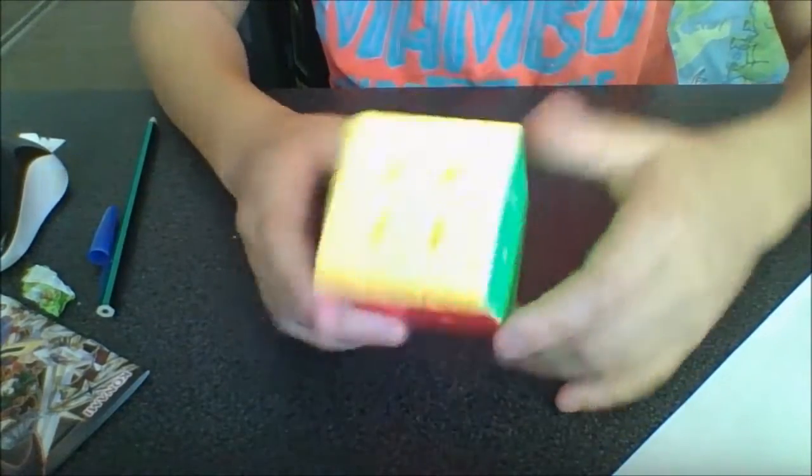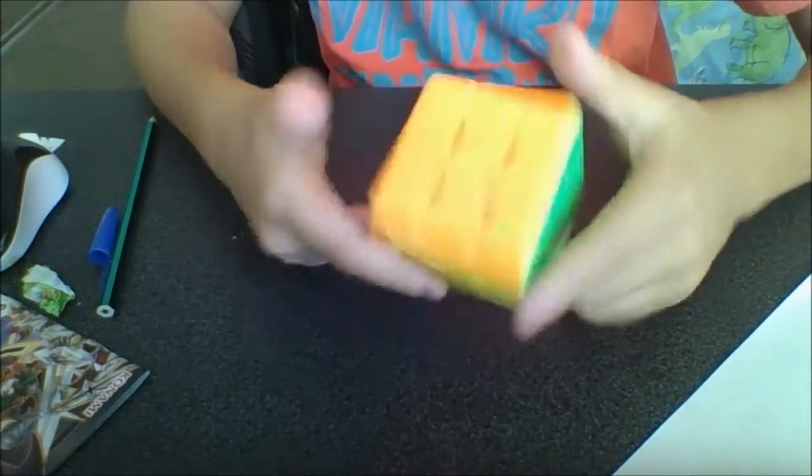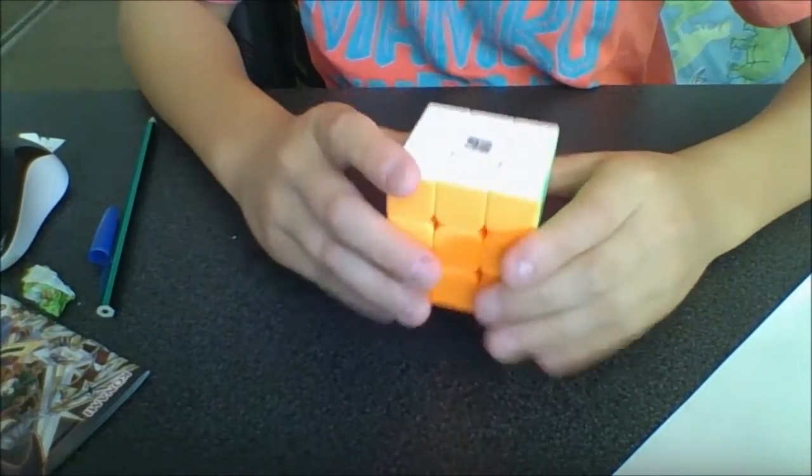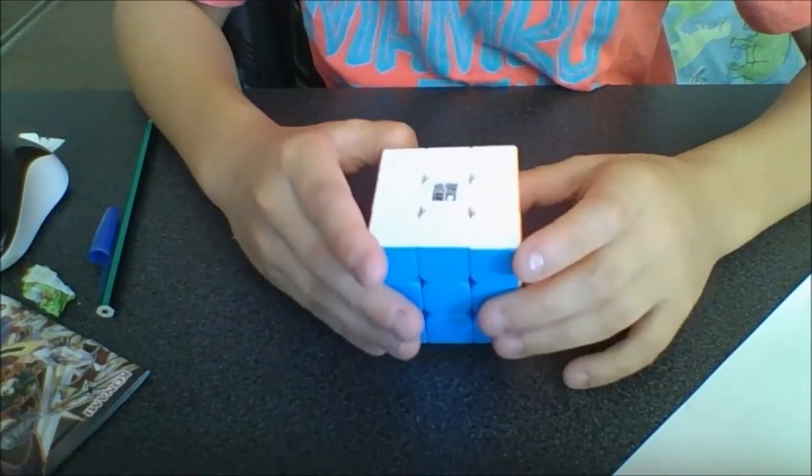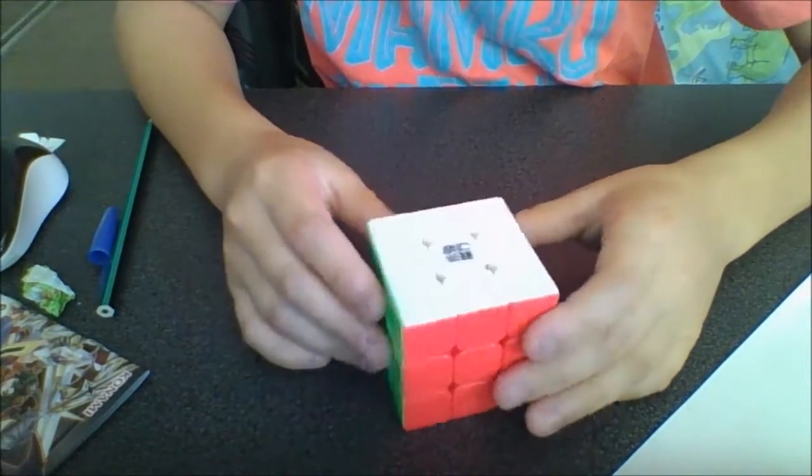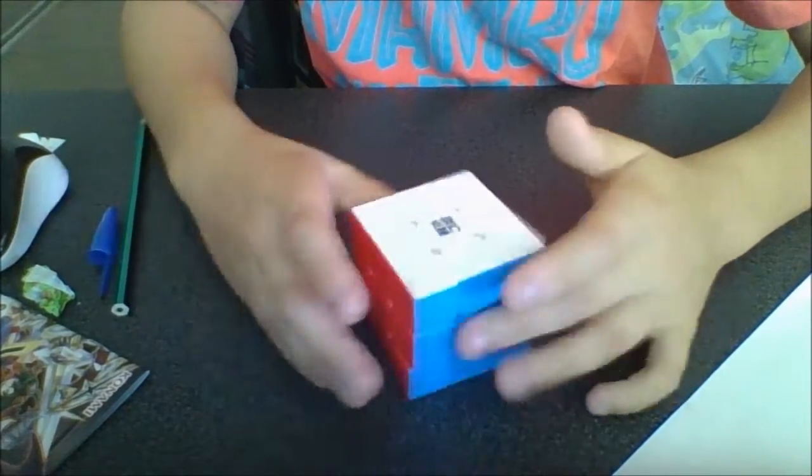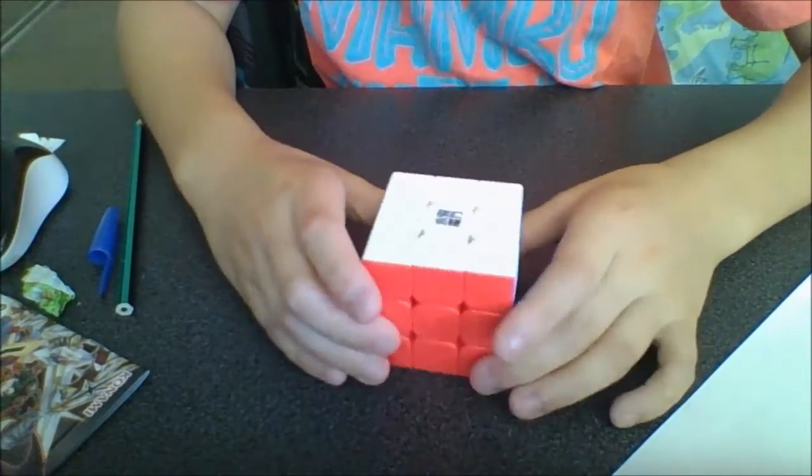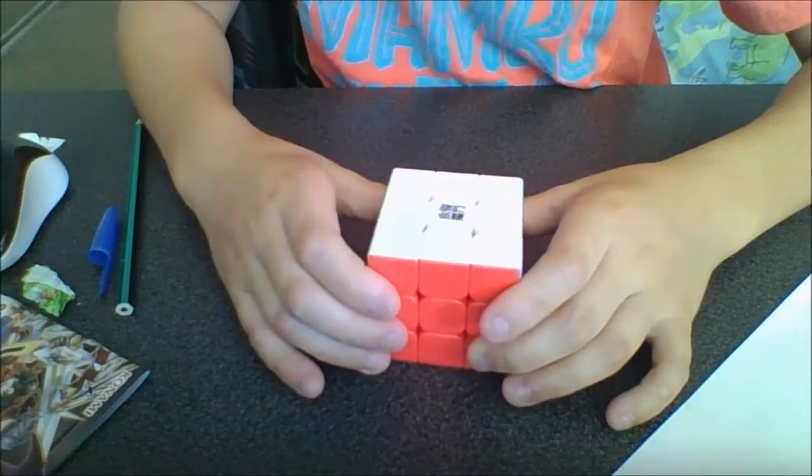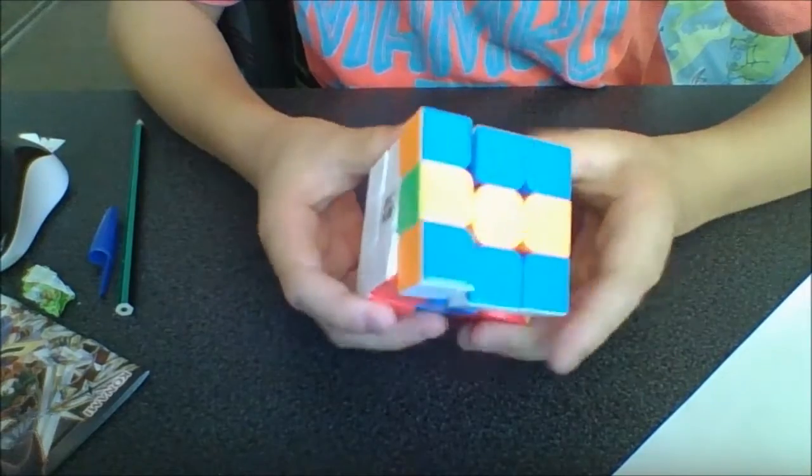It's a nice looking cube. It's got something written there, and I don't read Chinese, so I wouldn't be able to read it. I think it might say Yongjun, because that's the company, or well, Moyo is the main company, but Yongjun is just a little company in it.